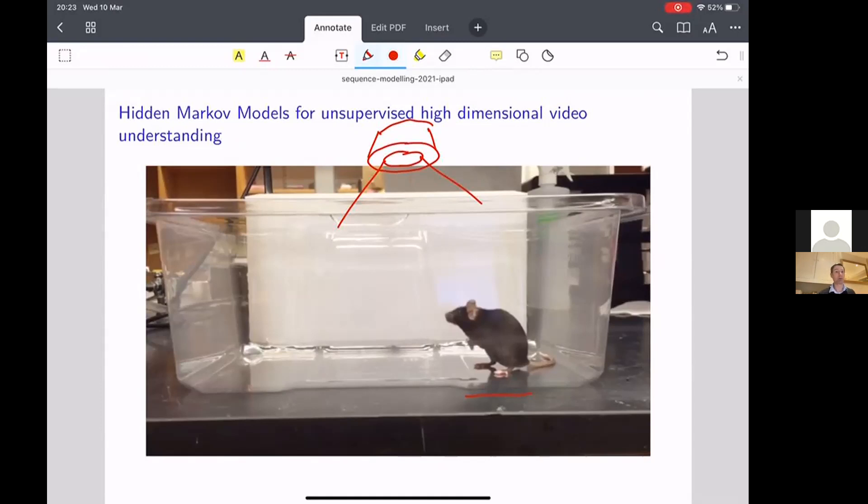So three different types of behavior that they might typically carry out in their environments here might be standing on their back legs, it might be grooming themselves, or it might be just walking about the environment. And what we would like to do is process these infrared videos, which are taken from above the environment here,